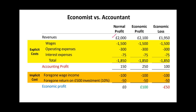The accounting profit is just the difference between total revenue and explicit costs. Let's assume that in a year the business — a small law practice or solicitors — made £2000 in revenue. As accountants, we take away the explicit costs: wages, operating expenses, and interest expenses. Taking only these three explicit costs, revenue minus explicit costs gives us an accounting profit of £150.